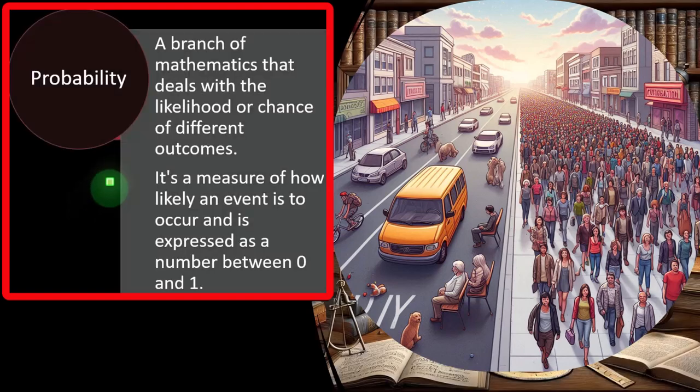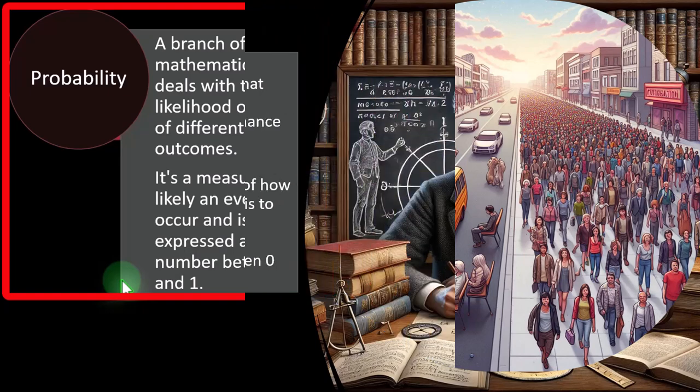Probability is a measure of how likely an event is to occur, expressed as a number between 0 and 1, which can also be expressed as a percent from 0% to 100%. For example, if you flip a coin, you have a 50-50 chance to get heads or tails, which adds up to 100%, or 0.5 versus 0.5, which adds up to 1.